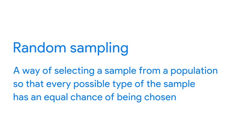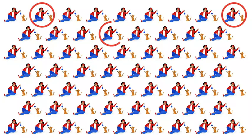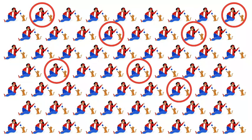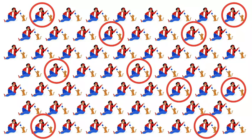Using random sampling can help address some of those issues with sampling bias. Random sampling is a way of selecting a sample from a population so that every possible type of the sample has an equal chance of being chosen. Using a random sample of cat owners means cat owners of every type have an equal chance of being chosen — so cat owners who live in apartments in Ontario would have the same chance of being represented as those who live in houses in Alberta.